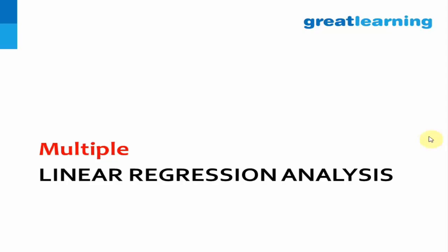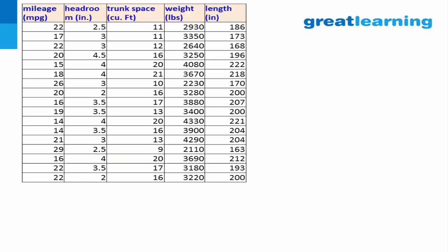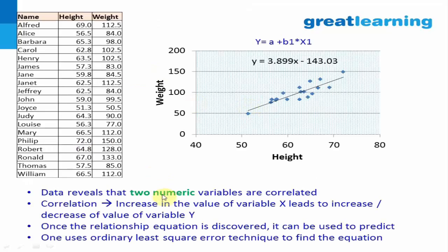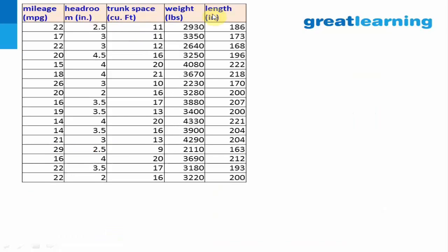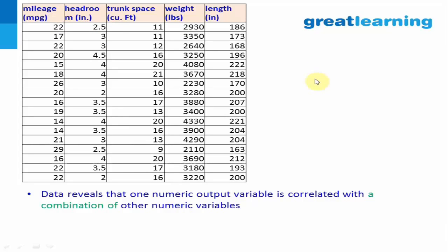Multiple linear regression is just an extension of simple linear regression. Here the mileage of a car depends on headroom, trunk space, weight, length, and other things. The difference is that your dependent numeric variable is linked with a combination of independent variables. In simple linear regression you had just two variables — one to one — that's why it's called simple. In multiple linear regression you have multiple independent variables and one dependent variable.